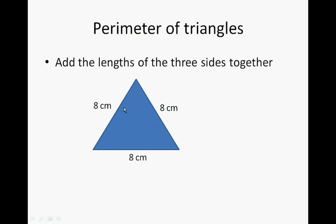So the perimeter of this triangle will be 8 plus 8 plus 8, and that is 24 centimeters. This is an equilateral triangle.